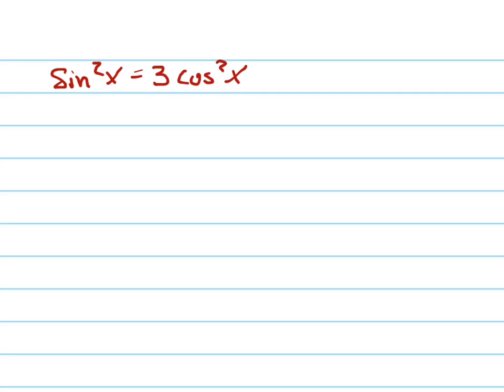We'll solve this trig equation. So first thing I'm going to do is rewrite the equation in terms of sine so that I have only one variable in my equation. So I turn this into 1 minus sine squared x.